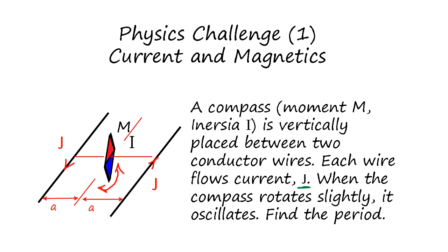We place a compass with magnetic moment M and mechanical moment of inertia I between the wires. The magnetic field is going to align this compass, and if you push it a little, it starts oscillating.